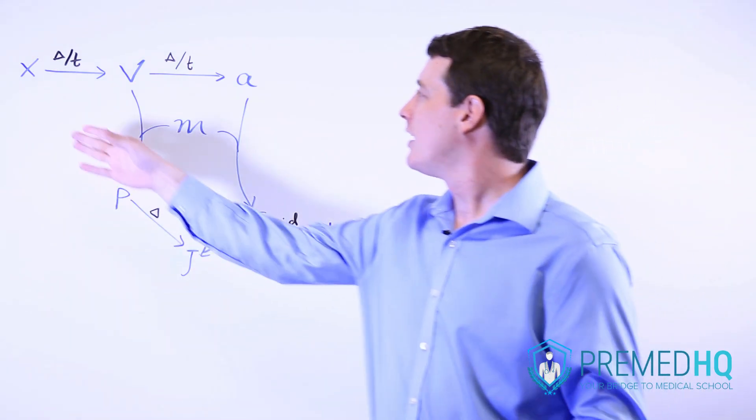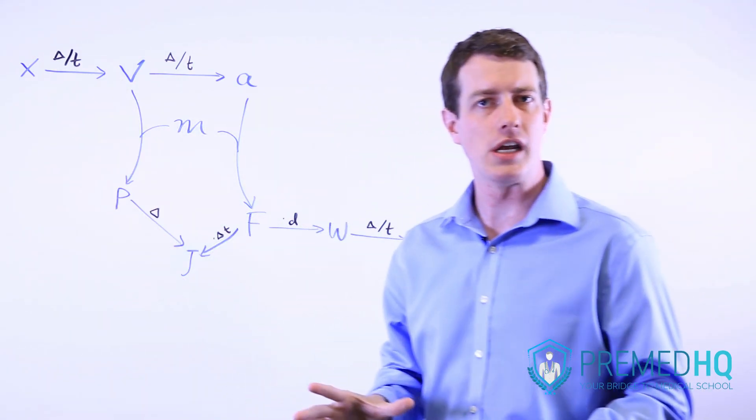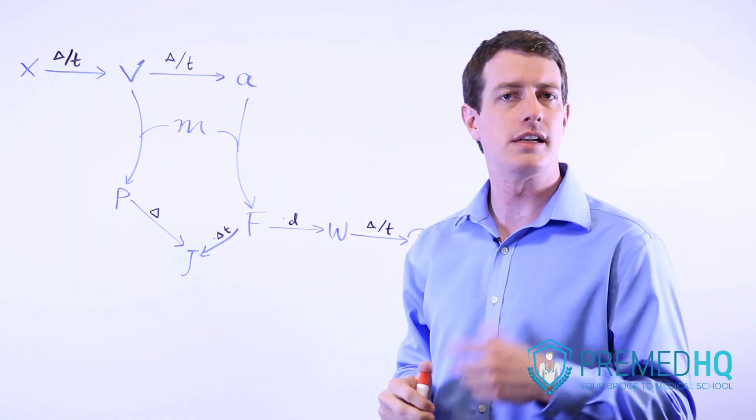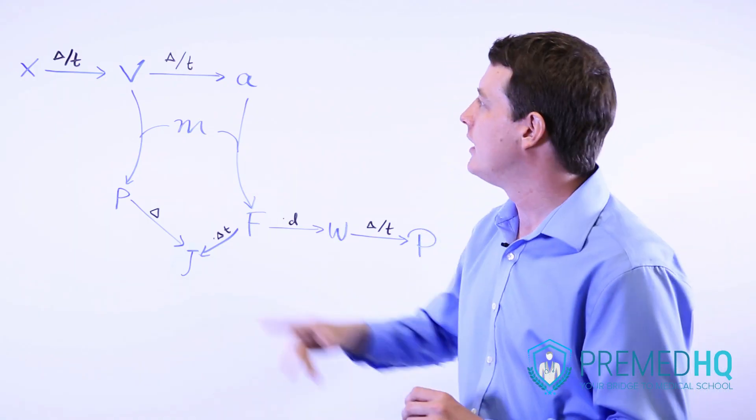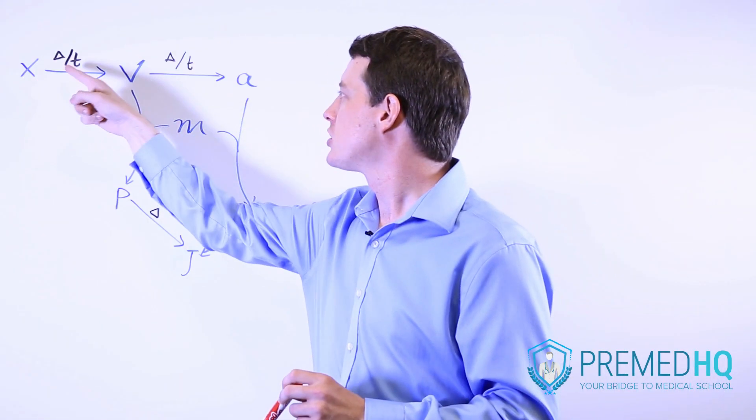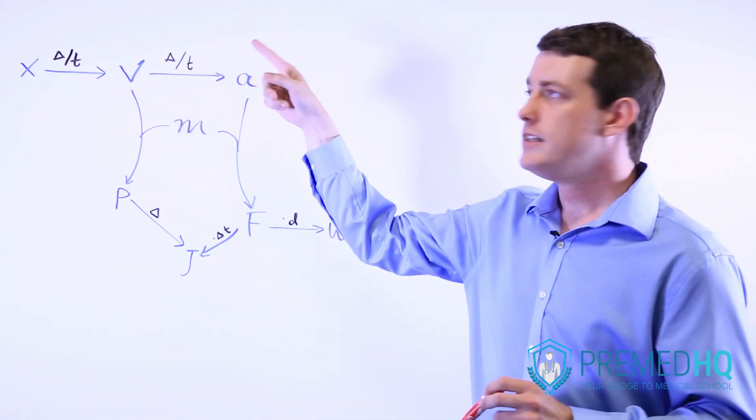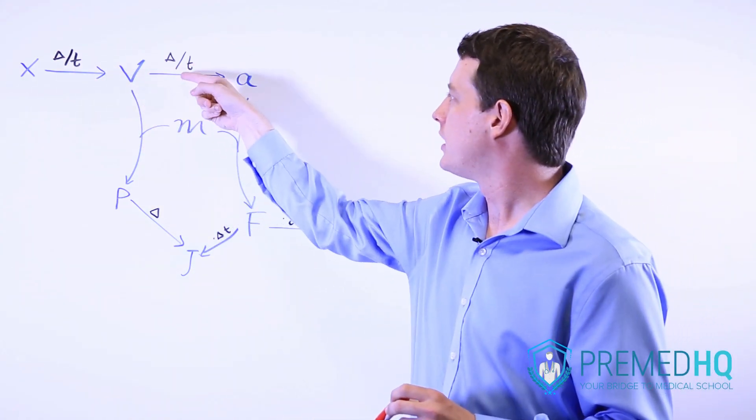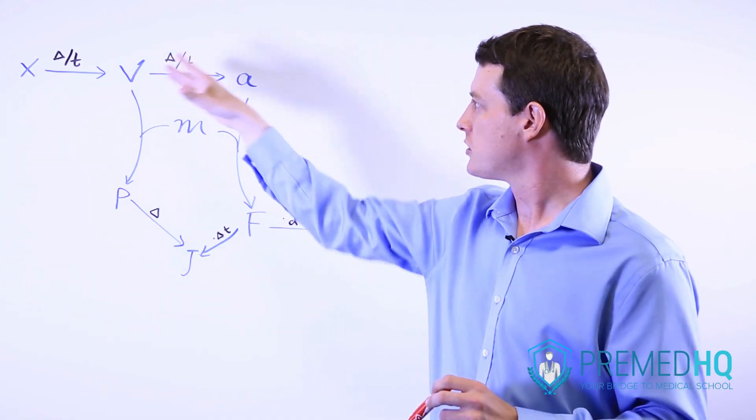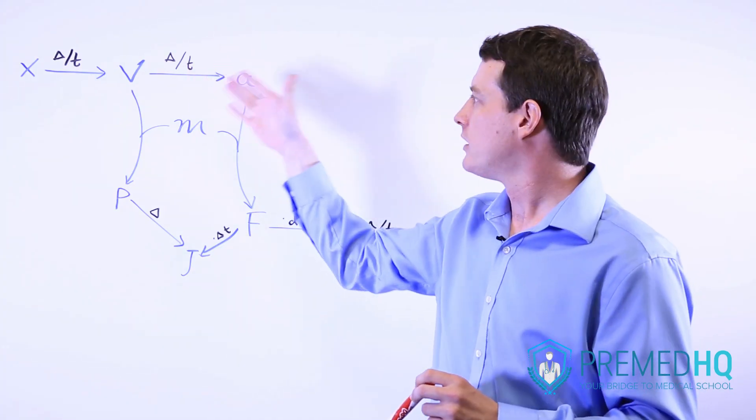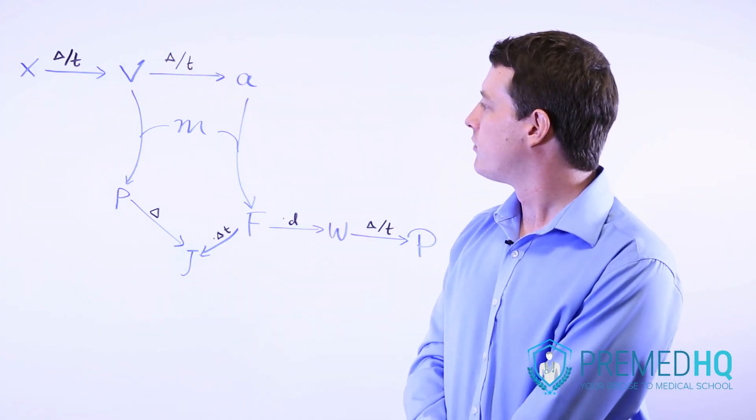So we'll start out with x or position. You may at times see this listed as d or distance. And if you take the change in position over time, that gives you velocity. Taking the change in velocity over time gives you acceleration. And those are two of the fundamental qualities that we've learned about physics before.